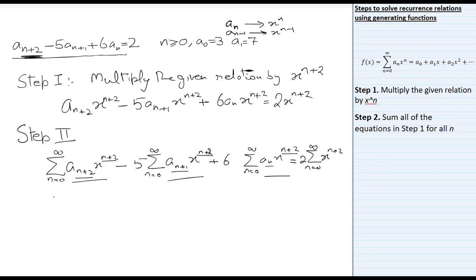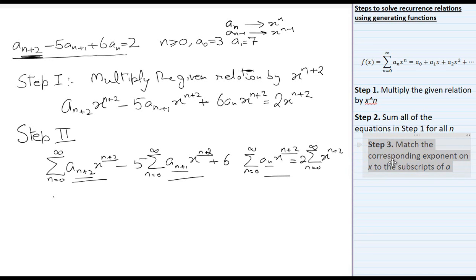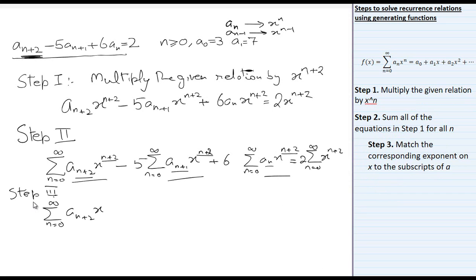So what is Step 3? Step 3 is to match the corresponding exponent on x to the subscript of a. Here x^(n+2) matches with aₙ₊₂. But here one extra x is present, so we write 5x · Σ(n=0 to ∞) aₙ₊₁ · x^(n+1).